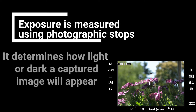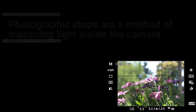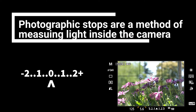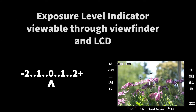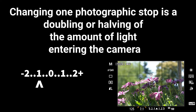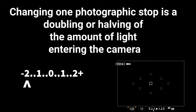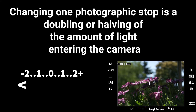Exposure is measured in photographic stops. Photographic stops aren't really a unit of measurement so much as they are a method of measurement. To assess how much light we have getting into the camera, we use the exposure level indicator, which is viewable through the viewfinder or the LCD. In the lower right-hand part of what you're looking at here, you can see a view through a camera. At the bottom of it, there's a number line — that's the exposure level indicator.